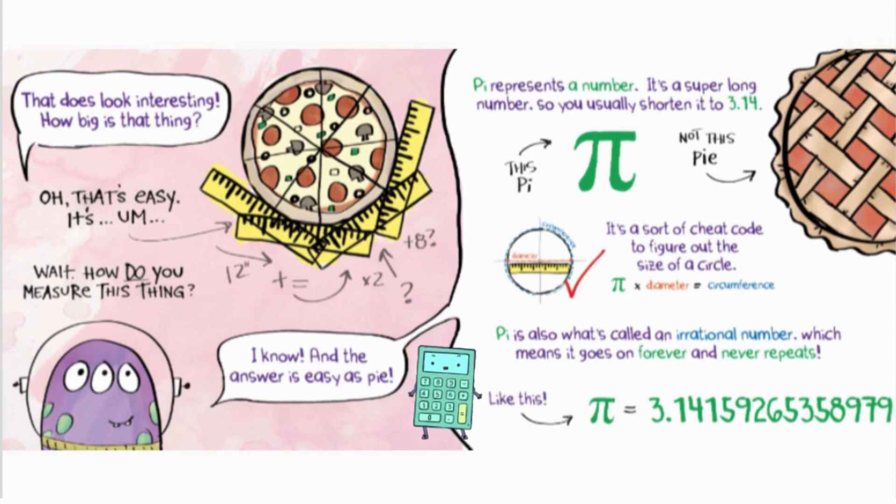I know, and the answer is easy as pi. Pi represents a number. It's a super long number, so you usually shorten it to 3.14. This pi, not this pie. It's sort of a cheat code to figure out the size of a circle. Pi times diameter equals circumference.